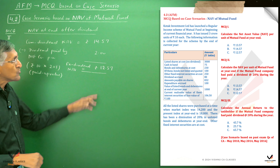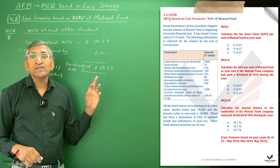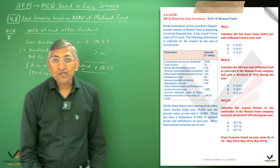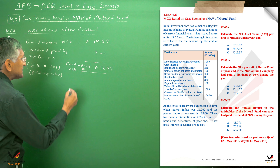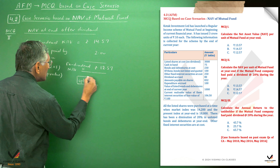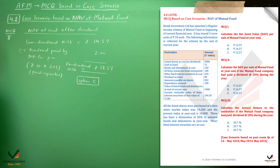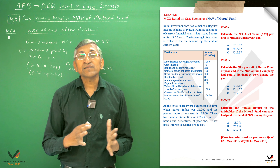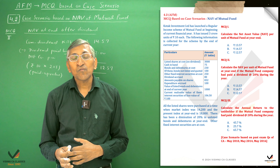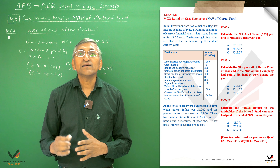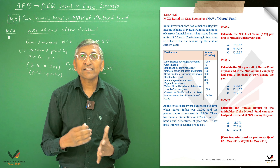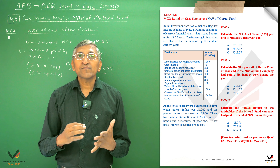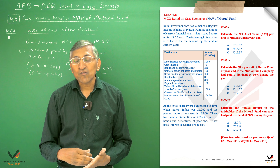So the ex-dividend NAV is rupees 12.57. This is how it is called the ex-dividend NAV. You can see which option is correct — the answer is Option C.